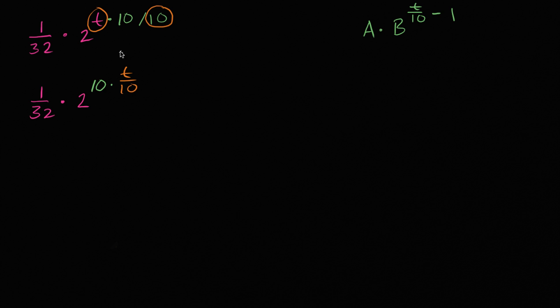So I have this t over 10. But when I write it this way, an exponent property might jump out at you. If I have a to the b and then I raise that to the c, that's going to be a to the bc. Or another way around, a to the bc is going to be a to the b to the c. And so this piece right over here, I can rewrite it as 2 to the 10th and then raise that to the t over 10 power.